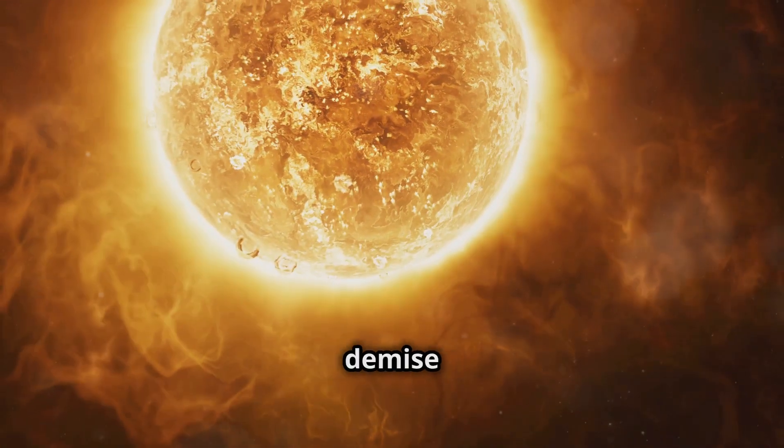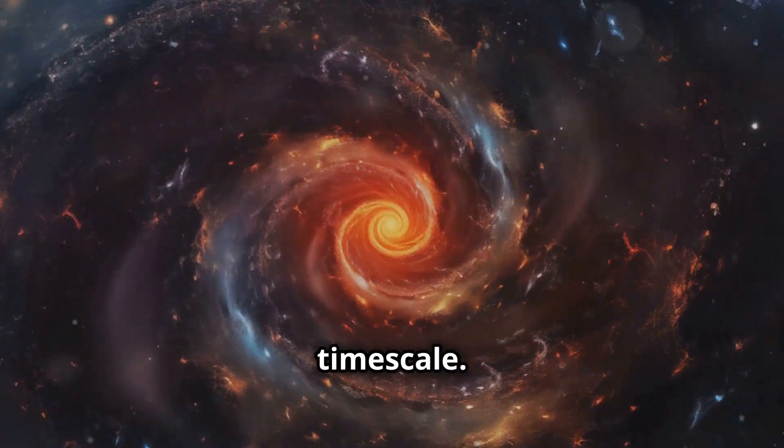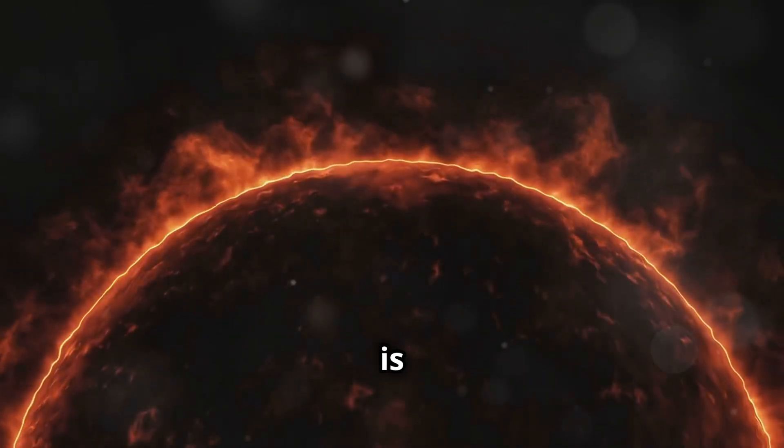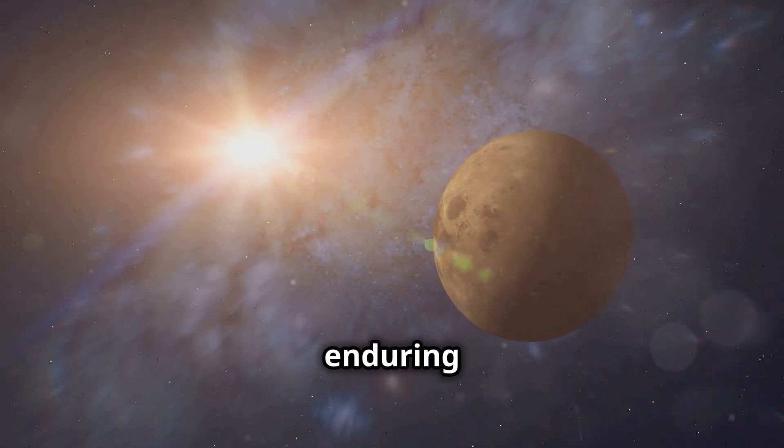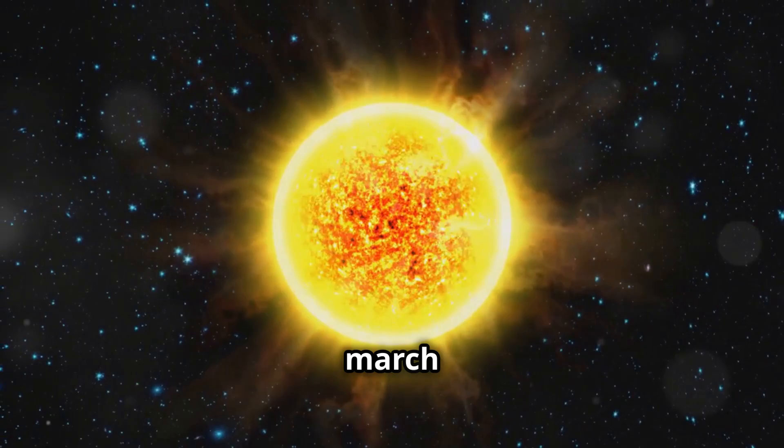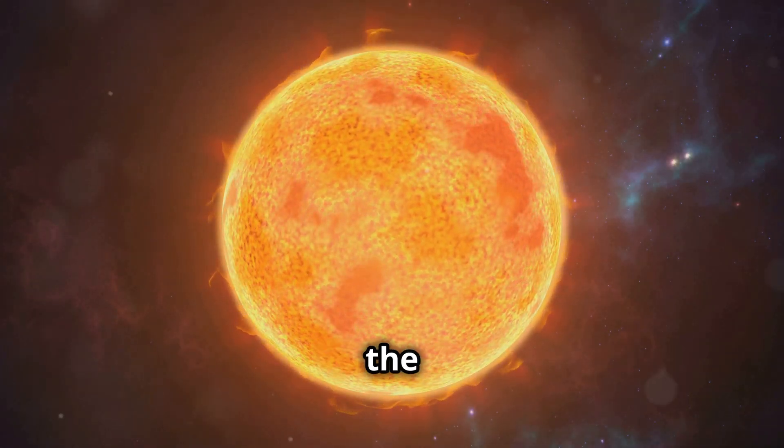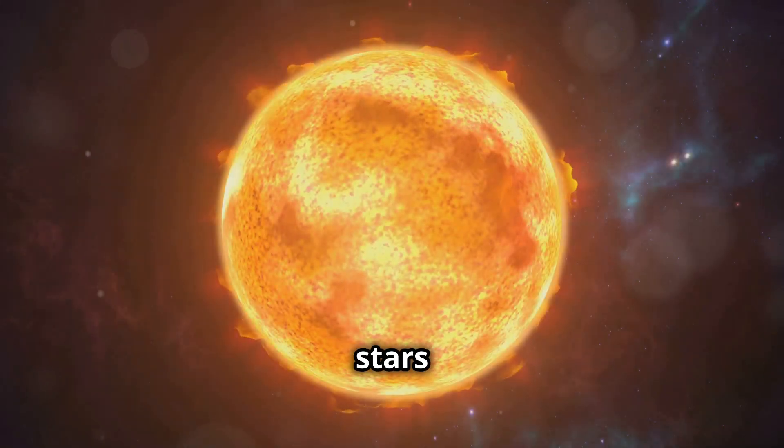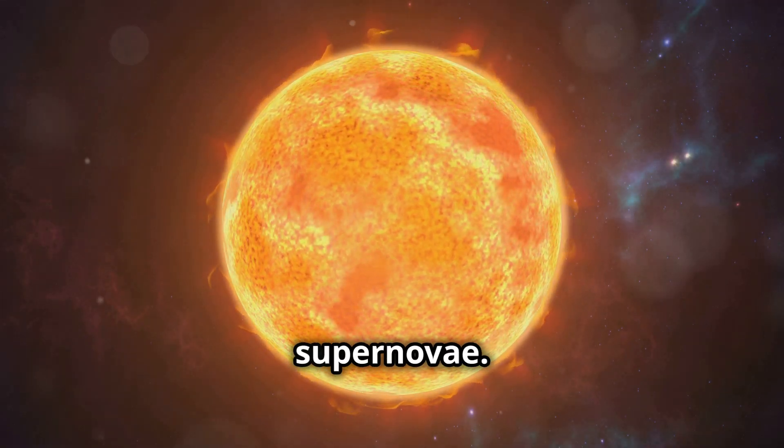The sun's eventual demise and the life cycle of massive stars like Stevenson 2-18 are reminders of the cosmic timescale. While our sun's death is billions of years away, it's a sobering thought that even the most enduring celestial bodies are subject to the laws of physics and the relentless march of time. The sun will eventually expand into a red giant, engulfing the inner planets. Massive stars like Stevenson 2-18 will end their lives in spectacular supernovae.